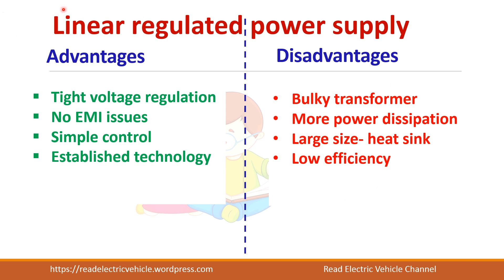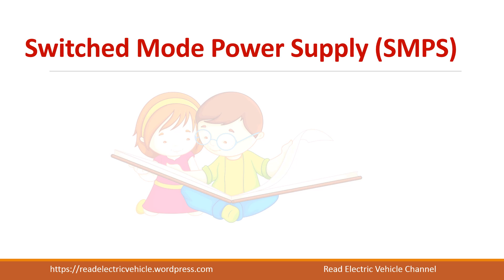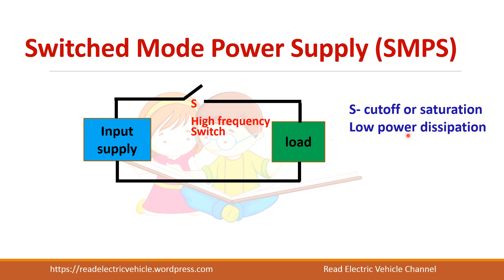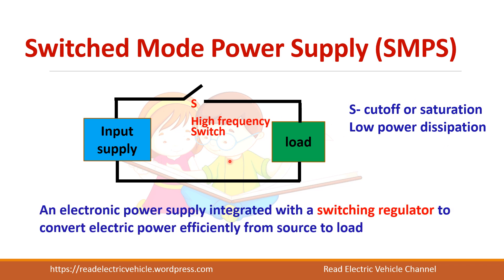Next we will see about switched mode power supply unit. As the name suggests, the power to the load is controlled by a switch, which will be operated at a very high frequency. This switch will be either in the on condition or off condition — that is, the transistor will be in either cutoff mode or saturation mode, unlike the linear regulated power supply where it operates in active mode. In cutoff and saturation mode the power loss is very less, so this system is said to be very efficient. SMPS is a power supply unit integrated with a switching regulator where power transfer takes place efficiently.